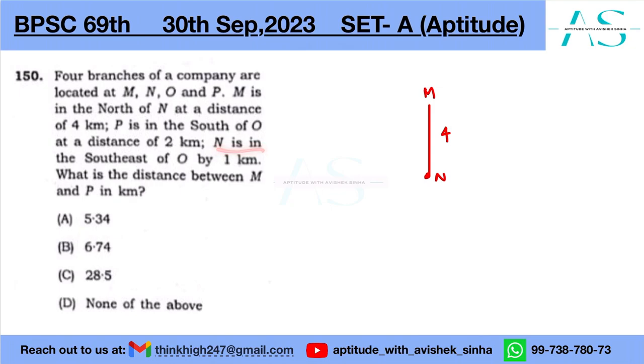N is in the southeast of O by one kilometer. N is already plotted. It is southeast of O. I will give you a little reference. So this is not south east west. This is southeast. South east comes here. So this is one unit of gap. And here is O.